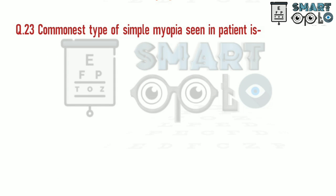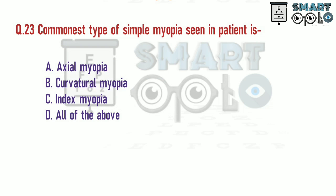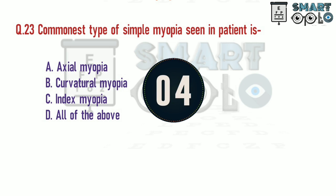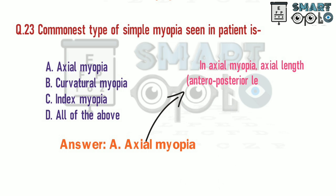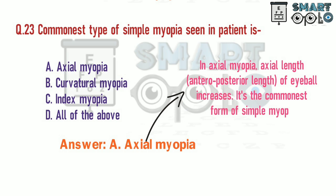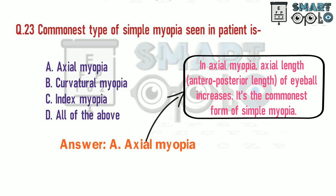Q23. What is the commonest type of simple myopia seen in patients? A. Axial myopia. B. Curvatural myopia. C. Index myopia. D. All of the above. In axial myopia, the axial length, i.e., the anterior-posterior length of the eyeball, increases. It is the commonest form of simple myopia.